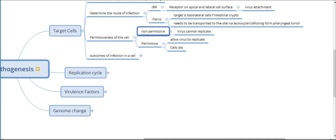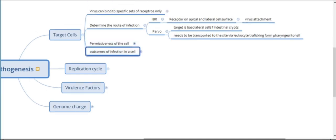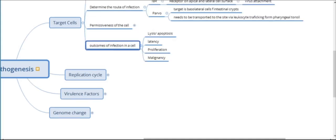Once a virus infection and replication happens, there are four possibilities: the virus will lyse the cell and come out; the virus may induce apoptosis of the cell; the virus may remain in the cell without any damage — known as latency or persistence; or the virus can induce the cell to proliferate or induce malignancy.